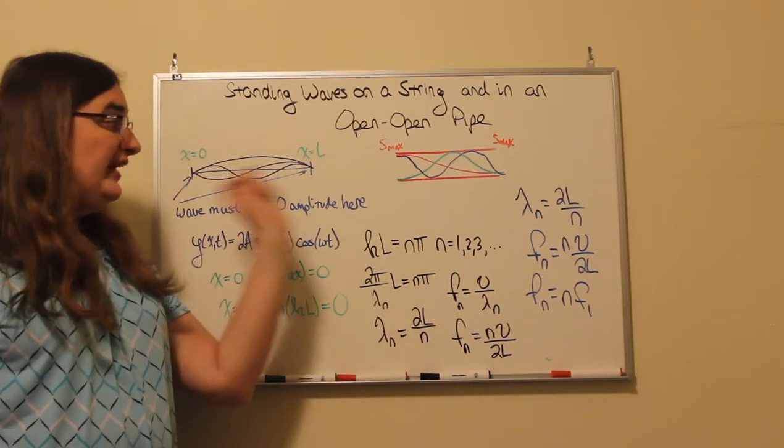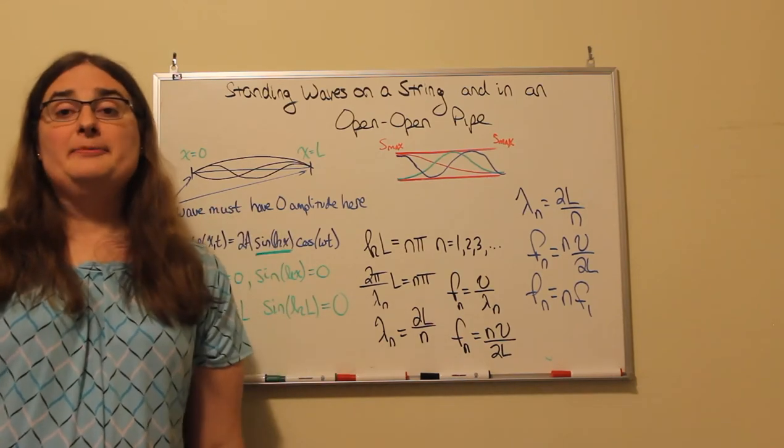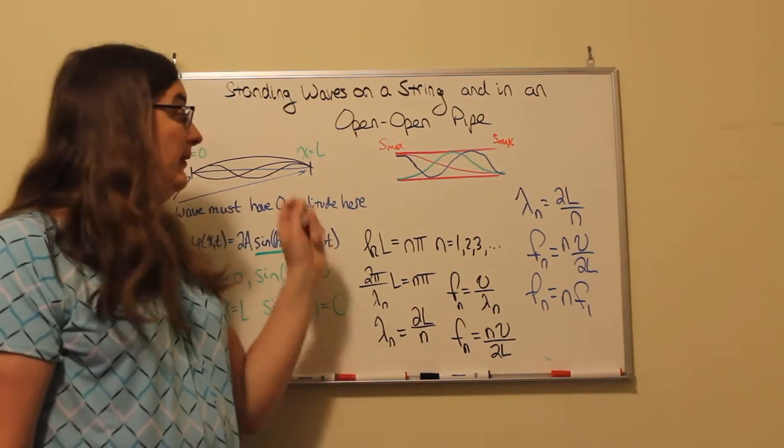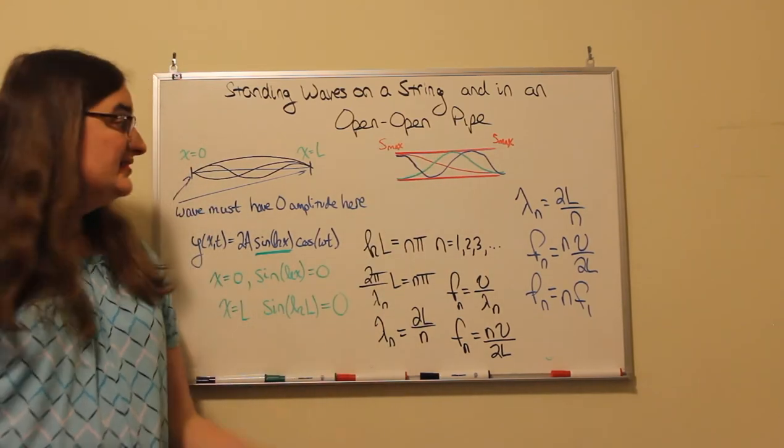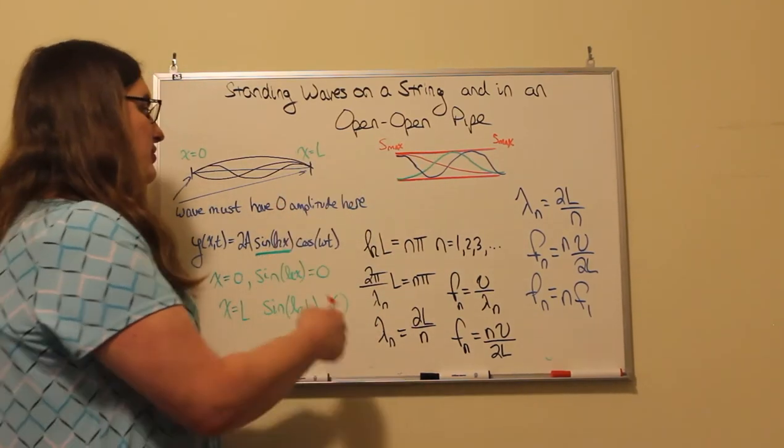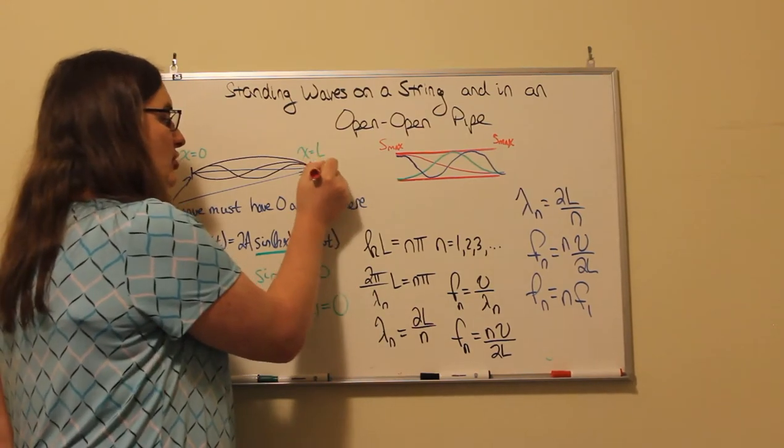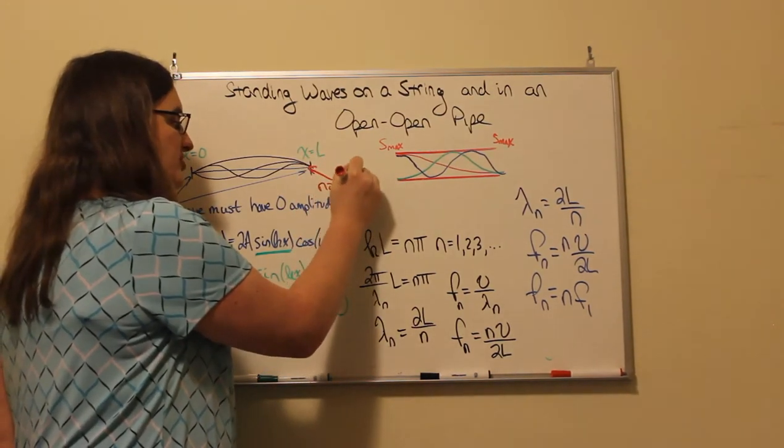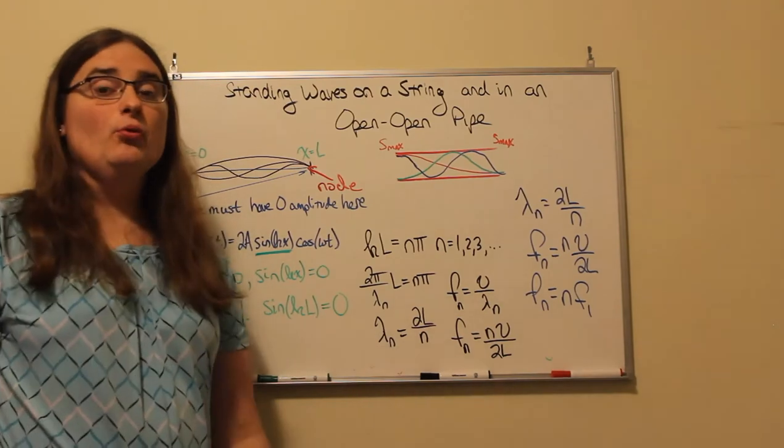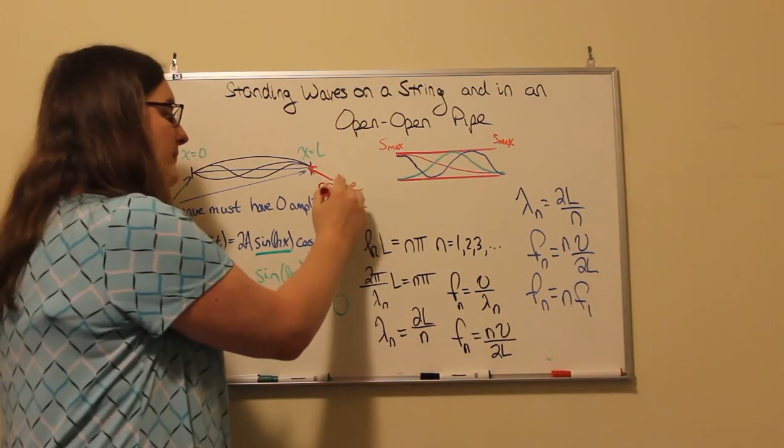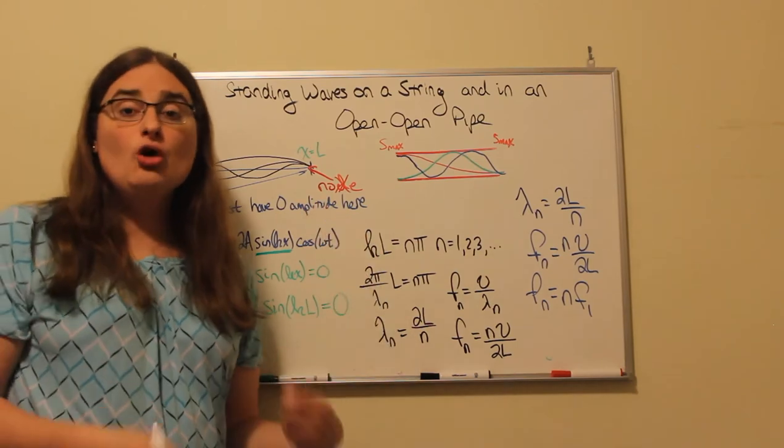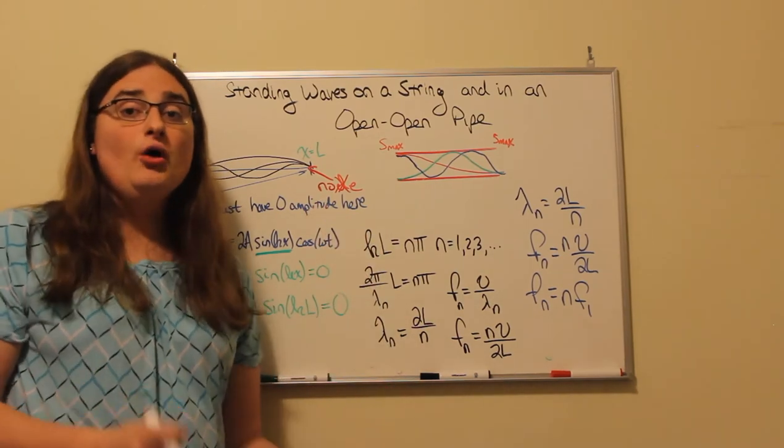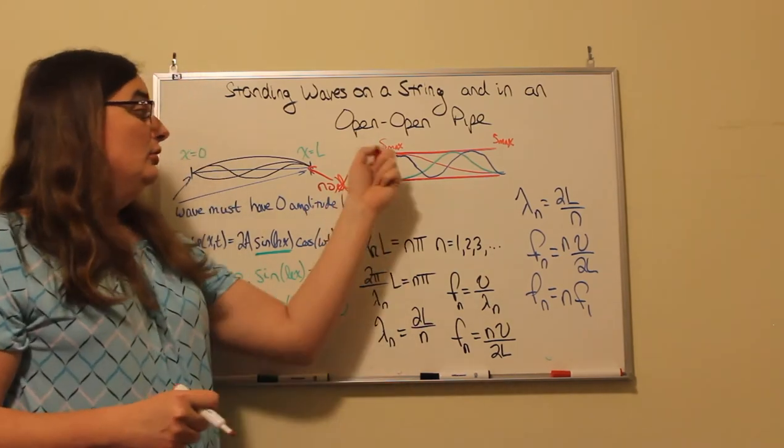Now for the case of an open-open pipe, it's similar because we have similar end conditions on each side. But instead of being at a place where there's no amplitude, we call nodes. A mnemonic to remember what a node is: if you drop the D, you have no E, no energy. There's no motion at a node, no energy at a node.